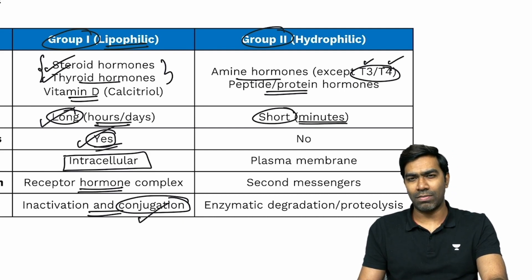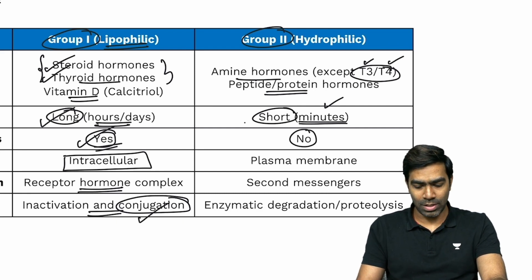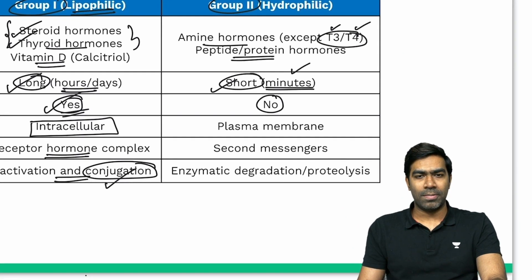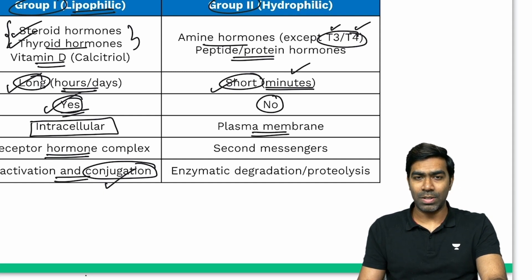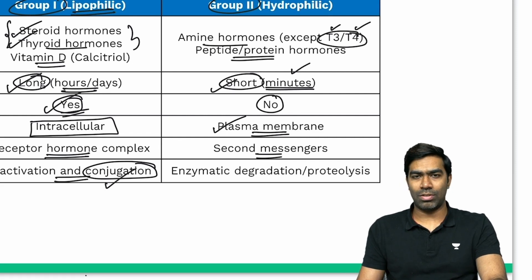Hydrophilic hormones have a short duration of action — their half-life is in the order of minutes or even seconds. Because they are water-soluble, they don't need transport proteins, which is one reason their duration is short. Since they cannot cross the cell membrane, they act on plasma membrane receptors, with signal transduction occurring through second messengers like cyclic AMP.